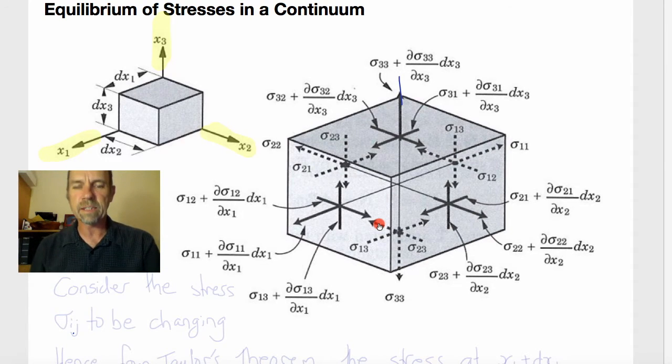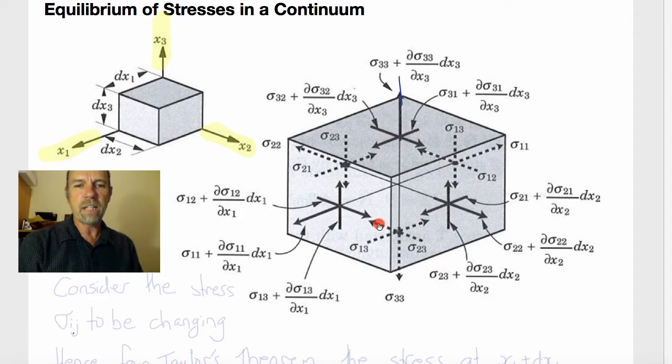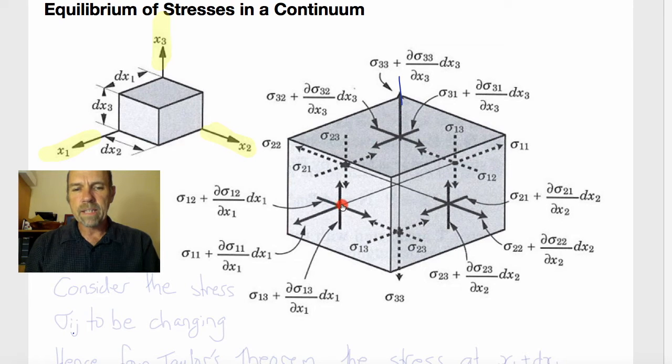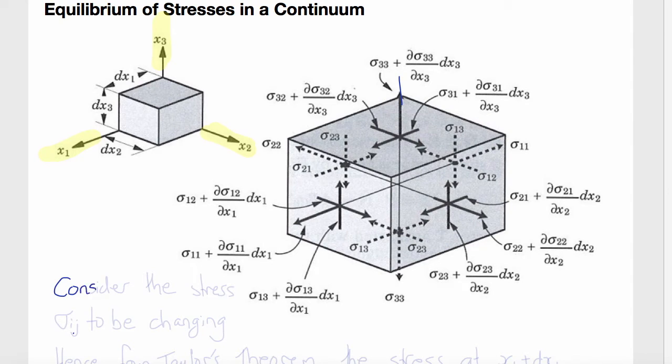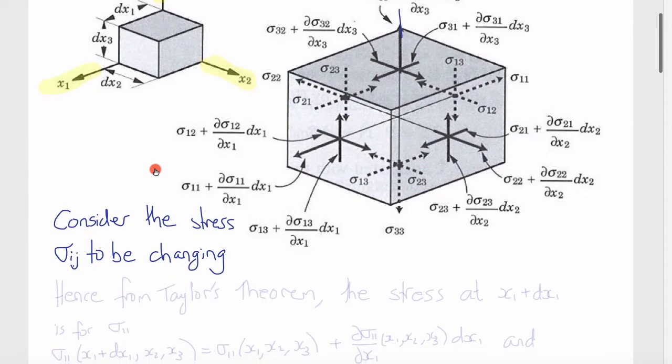Although these are actually the negative faces of this parallelepiped, we're assuming that these stresses are changing so that using a Taylor series expansion, we would see that the stresses on the opposite side would be incremented by a little bit. So for example, σ11 on this face would actually be σ11...